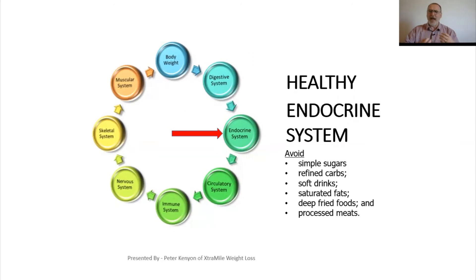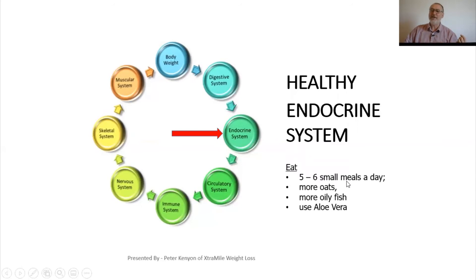When it comes to developing a healthy endocrine system, we're asked to avoid simple sugars, refined carbohydrates, soft drinks, saturated fats, deep fried foods and processed meat. And guess what? These are the foods that we're told to avoid on our diet plan. We're asked to eat five to six meals a day. Isn't that what we're asked to do on a diet plan? A healthy diet plan says to eat five to six meals a day to help keep your blood sugar levels constant. Asked to eat more oats, eat more oily fish, and to use aloe vera to help with the endocrine system again.